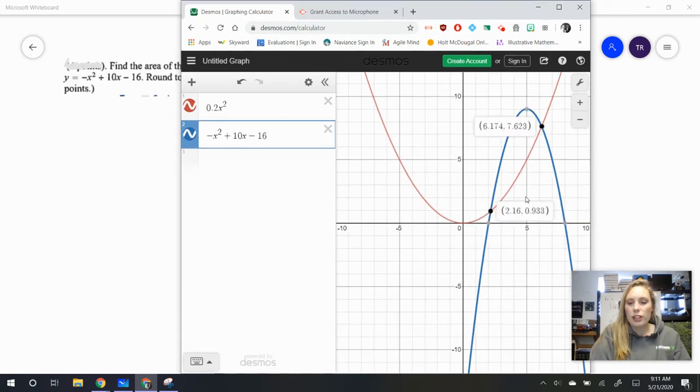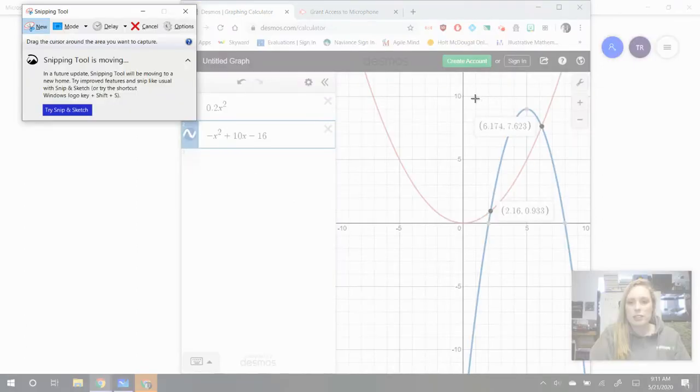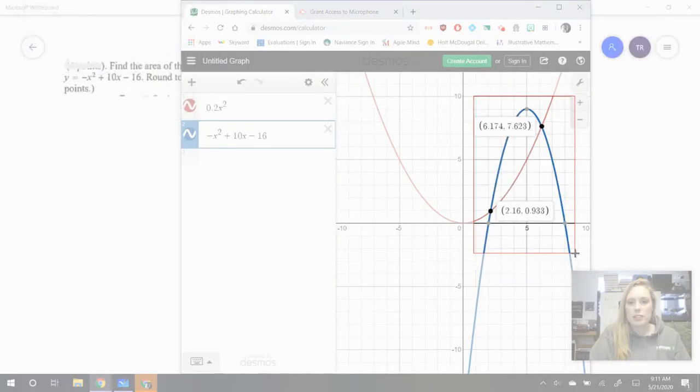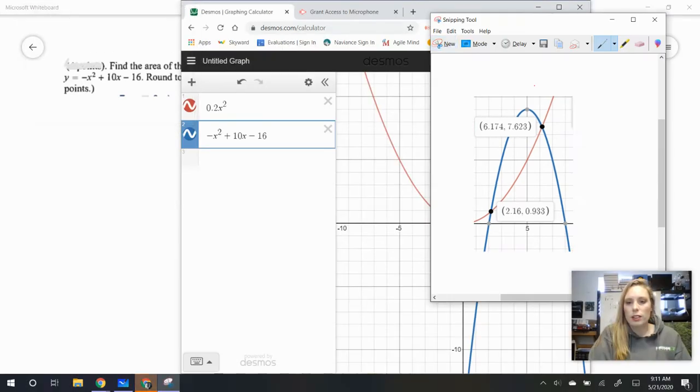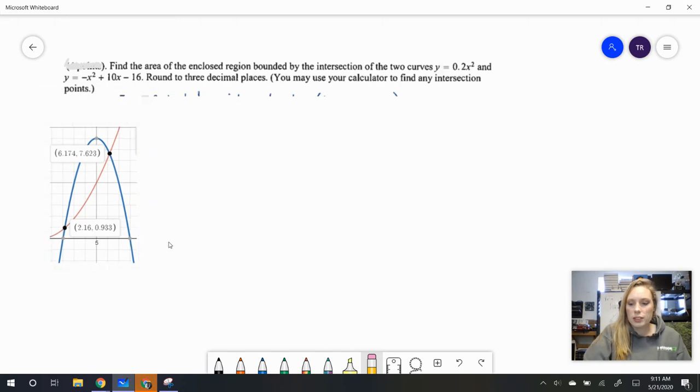Here and here they intersect, and so we want this region in between there. Let's go ahead and snip that so that we can have a drawing. I'm just going to copy that and then paste it over here. So we want to find the area bound by those two curves.